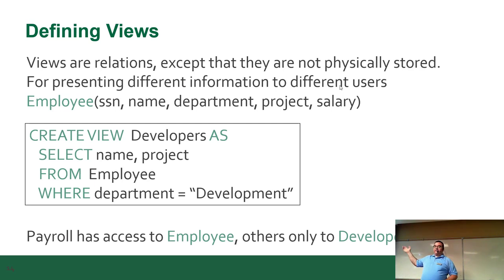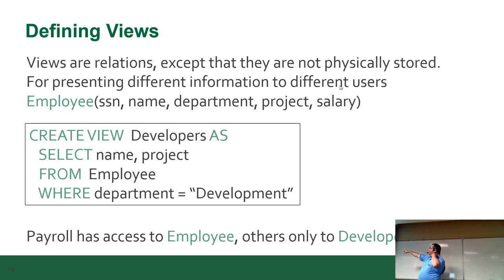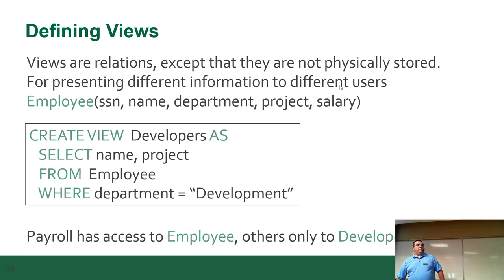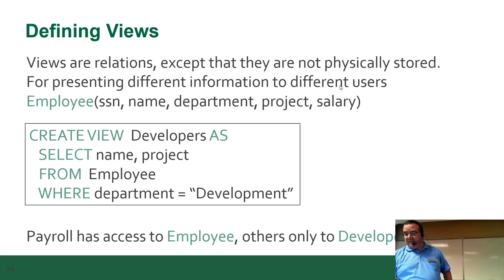An example: here's an employee table with those columns. You can create a view just for developers showing only their name and the project they work on if they work in development — a clean, quick, straightforward view.